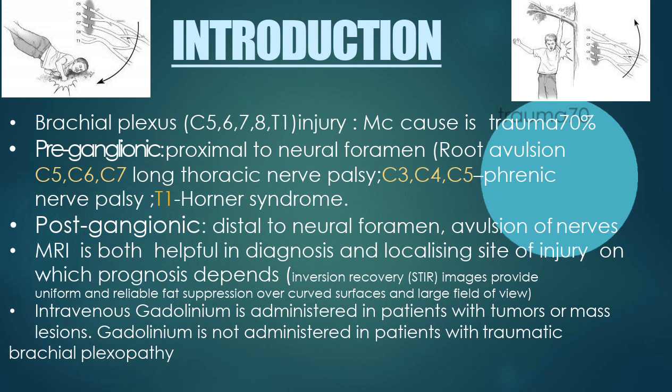Preganglionic lesions are the lesions proximal to the neural foramen, that is proximal to the dorsal nerve root ganglion. These are the root avulsion injuries, like long thoracic nerve palsy due to C5, C6 and C7 root involvement, or phrenic nerve palsy due to C3, C4 and C5 root involvement, or Horner syndrome due to T1 root avulsion.